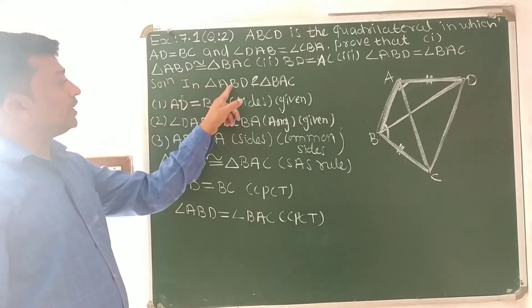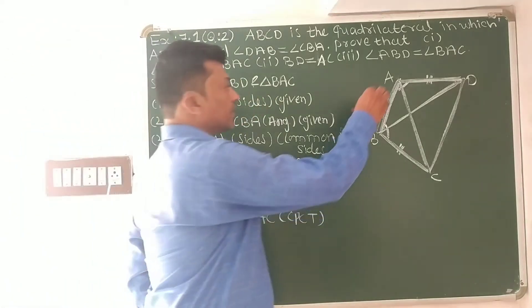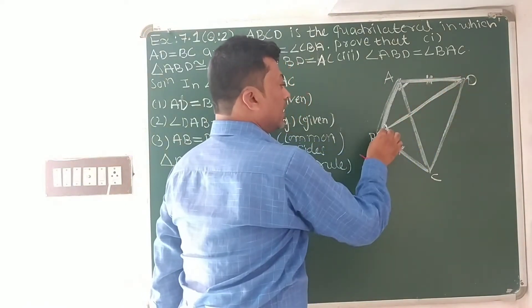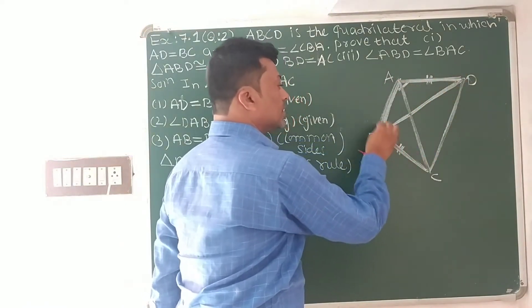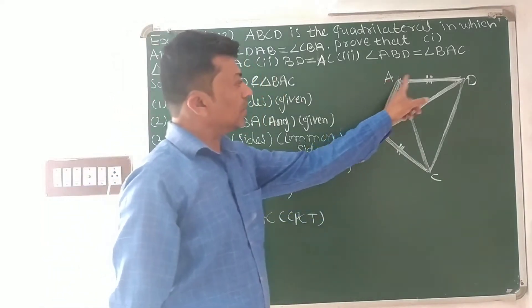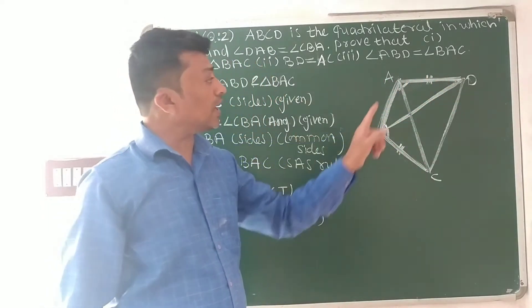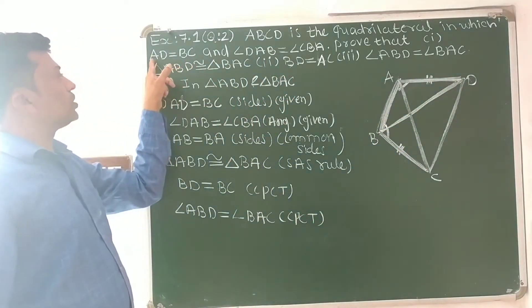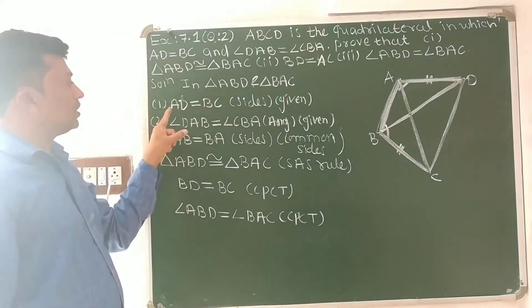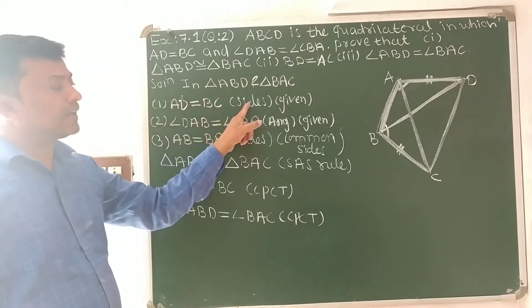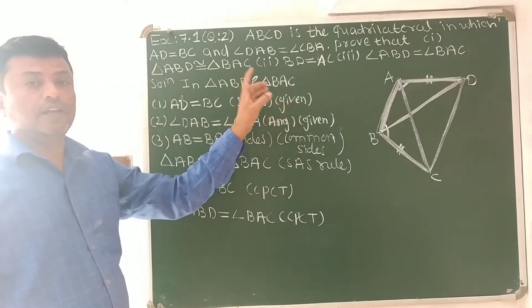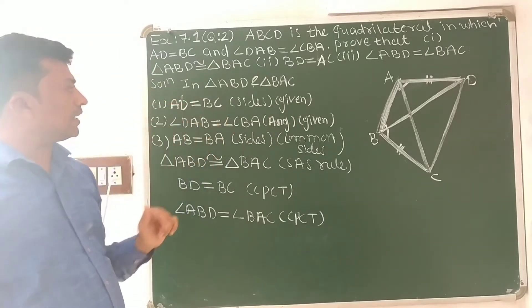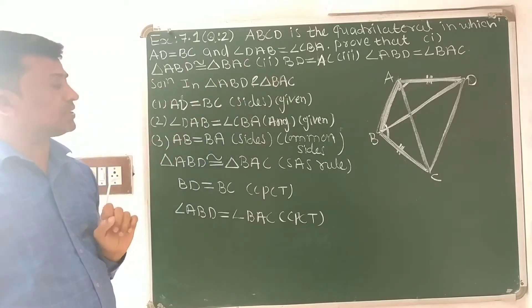Solution. In triangle ABD and triangle BAC: first, AD is equal to BC. In both triangles, AD is equal to BC — it is given in the question. They are sides and have the same length for both triangle ABD and triangle BAC.